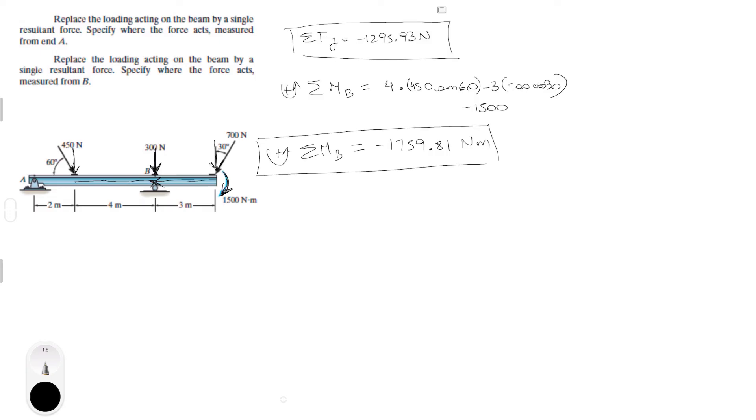Since the moment is negative, you know that it's trying to twist the arm this way. Therefore the point D is to the right of B and it is 1759.81 newton meters over 1295.93 newtons, and you're going to get that D is equal to 1.358 meters.